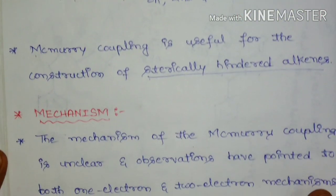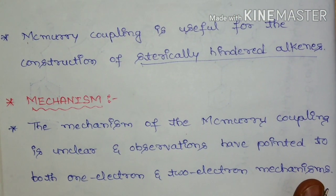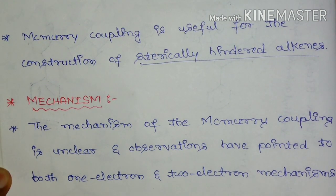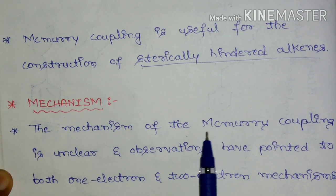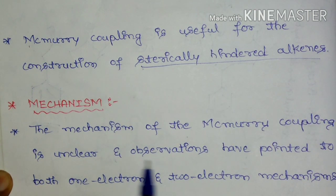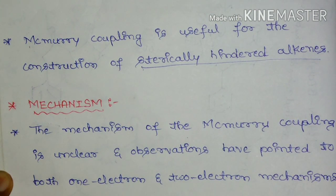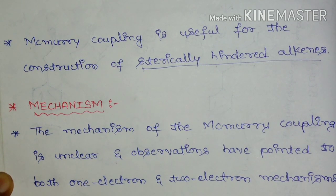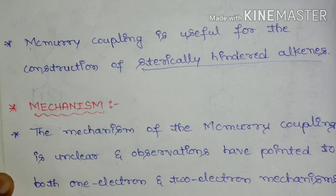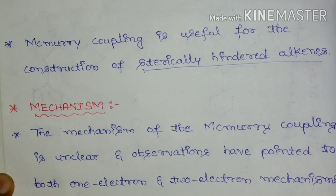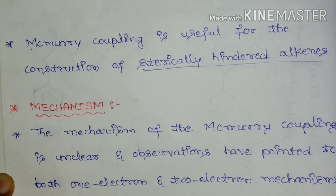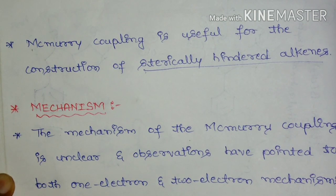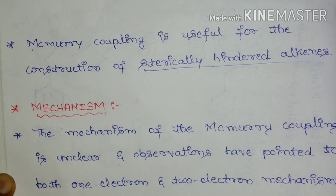Now we will see how this McMurray Coupling Reaction is going to take place through its mechanism. The mechanism of McMurray Coupling is unclear, and observations have pointed out that both one-electron and two-electron mechanisms are possible. Through particular observations, they have pointed out that both one-electron and two-electron mechanisms are possible for this McMurray Coupling Reaction.